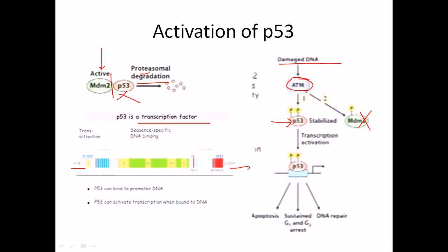When a DNA damaging situation arrives, ATM with some kinase proteins phosphorylates both p53 and MDM2. When MDM2 is phosphorylated, it is cleaved from p53. The phosphorylated p53 is now active and MDM2 is inactive, so a large amount of p53 accumulates inside the cell. These active phosphorylated p53 molecules sit on regulatory sites for transcription, producing proteins that lead the cell to apoptosis, help repair DNA damage, or arrest the cell cycle in G0 phase.